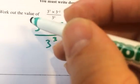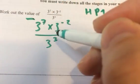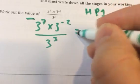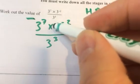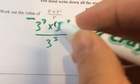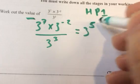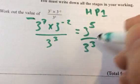We've got to work out the value of 3 to the 7 times 3 to the minus 2 over 3 cubed. So let's use our index laws. We know that when we multiply the bases, we're going to add the powers.